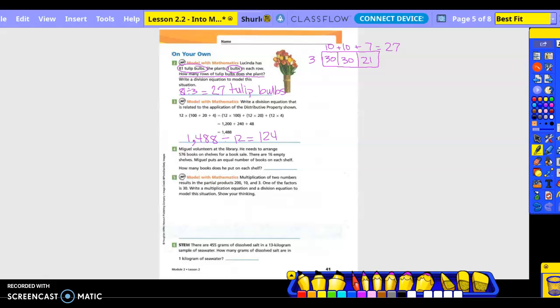How many books does he put on each shelf? So we have 576 books, 16 empty shelves, and then he wants to put an equal number on each shelf. How many books does he put on each shelf? Okay, so what is our equation going to be, guys?